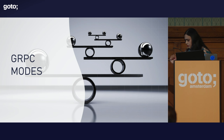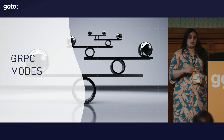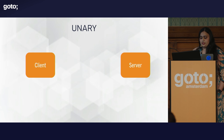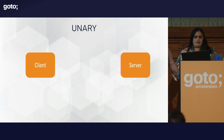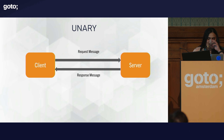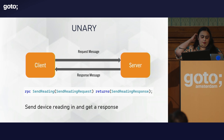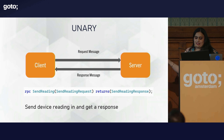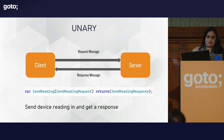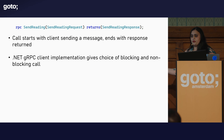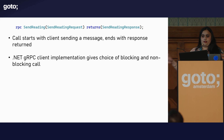Now we can talk about gRPC modes. There are multiple ways in which you have client and server interaction. The first is unary — the average client-server response — where the client sends a request message to the server, and the server responds back with a response message. The RPC definition is a single object that goes in and a single message that comes back. The call starts with the client sending the message, the server processes it, sends back a response, and the call is complete.